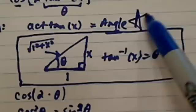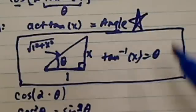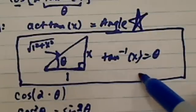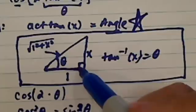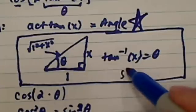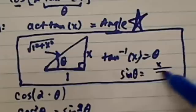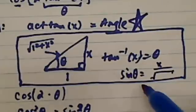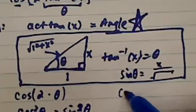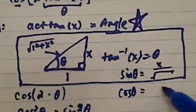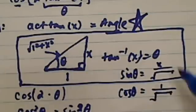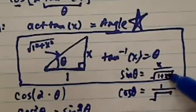So recognizing arctangent of x as an angle is vital. And from there, you can see that in this triangle here, our sine of theta is going to be x over hypotenuse. I'm just going to put the radical there. And cosine of this angle becomes 1 over the radical, the radical being 1 plus x squared.